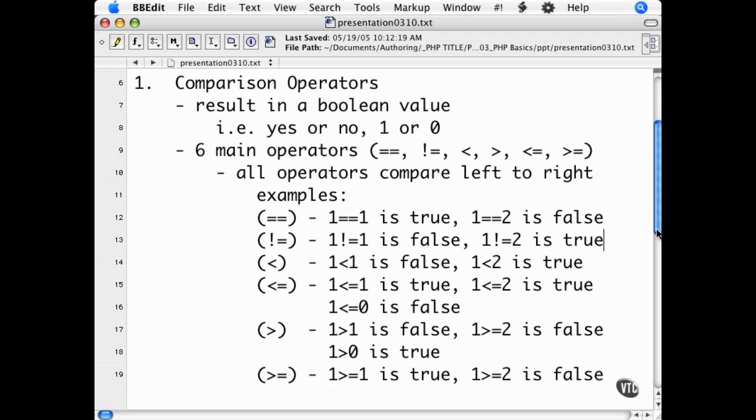There are six main comparison operators. They are the double equals, the exclamation equals, the less than, the greater than, the less than equals, and the greater than equals.